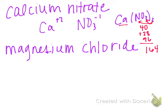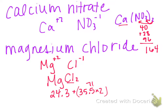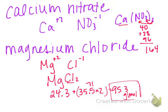For magnesium chloride: magnesium has a +2 charge and chloride has a −1 charge, so we need two chlorides, giving MgCl₂. No parentheses needed because it's not a polyatomic ion — the 2 goes right to chlorine. Magnesium is 24.3 (keeping that decimal since 0.3 is not close enough to round), and chlorine is 35.5 times 2, which is 71. So 71 plus 24.3 gives us 95.3 grams per mole.